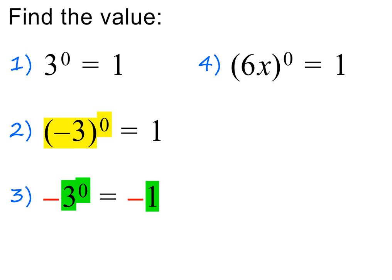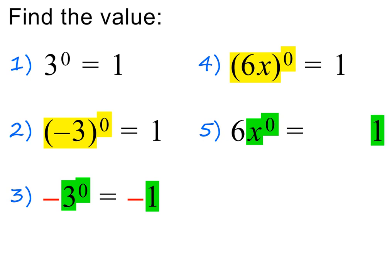Earlier, we also saw that 6x all to the power of 0 is equal to 1 — in this case, the whole bracket is the base. Let's now look at the same example but without the bracket. This time, the 0 exponent only applies to x — only x is the base. And x to the power of 0 is equal to 1, but the 6 in front needs to stay in the answer. Please note, this is actually 6 times 1, so the final answer is just 6. Please pause to study this important information.